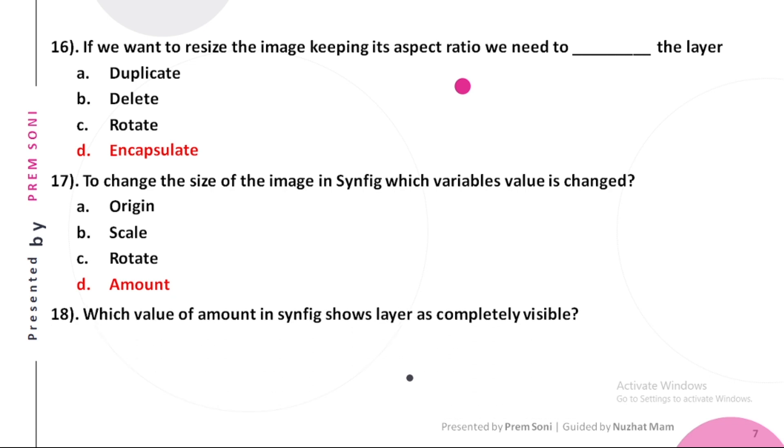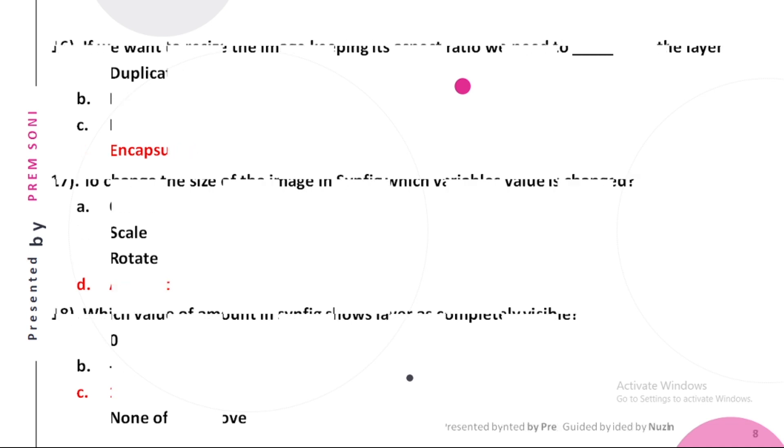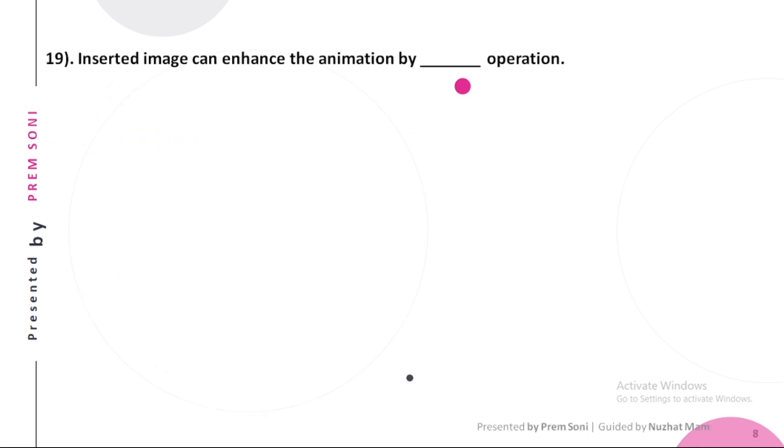Eighteenth, which value of amount in Synfig shows layer as completely visible? Options are: a. 0, b. Minus 1, c. 1, d. None of the above. The answer is 1. Nineteenth, inserted image can enhance the animation by dash operation. Options are: a. Scale, b. Rotate, c. Both a and b, d. None of these. The answer is both a and b.